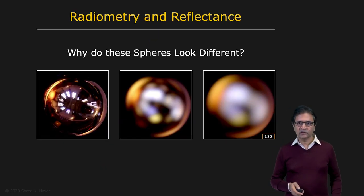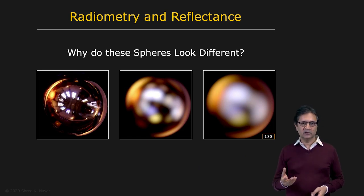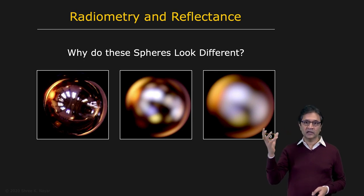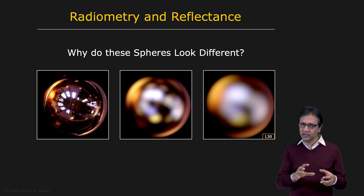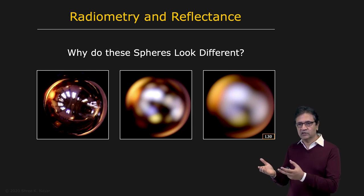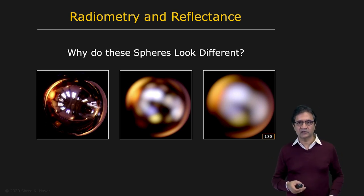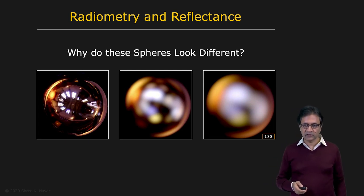Everything we've discussed thus far focuses on extracting information on the image plane — that is, in 2D. Next, we're going to lay the groundwork for developing algorithms that recover the three-dimensional structure of a scene from one or more images, going from 2D to 3D. We'll start with radiometry and reflectance. Radiometry is about measuring light — defining how bright a surface is, how intense a light source is. Once we have radiometric definitions in place, we look at reflectance: why does silk look different from velvet? We'll define a few different reflectance models that will come in really handy.